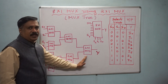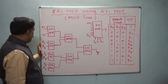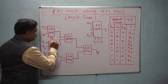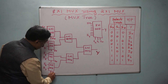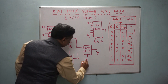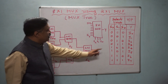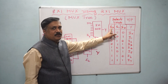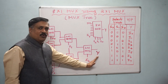Now, how to assign the select lines? Moving from lower order to higher order: all four first-level MUXes use S0 as their select line. The two second-level MUXes use S1 as their select line. And the final MUX uses S2. So S0 is the least significant bit, S1 is the next, and S2 is the most significant bit. We start from the least significant bit and go to the most significant bit.